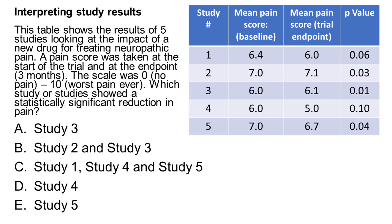The correct answer is E, study 5. This question is testing understanding of what p-value is statistically significant, but also data interpretation.